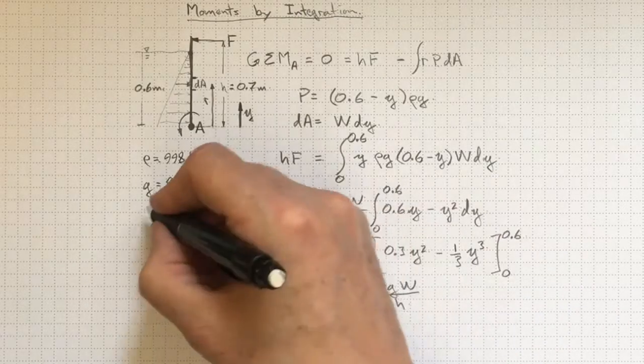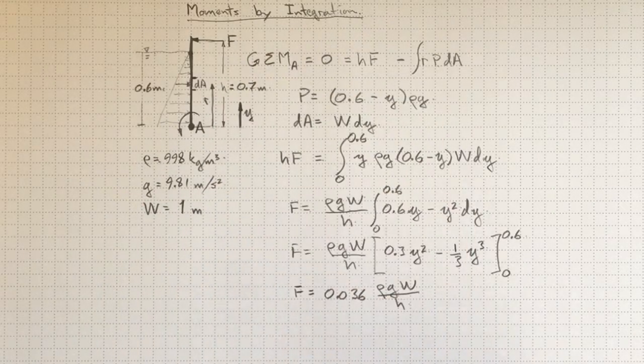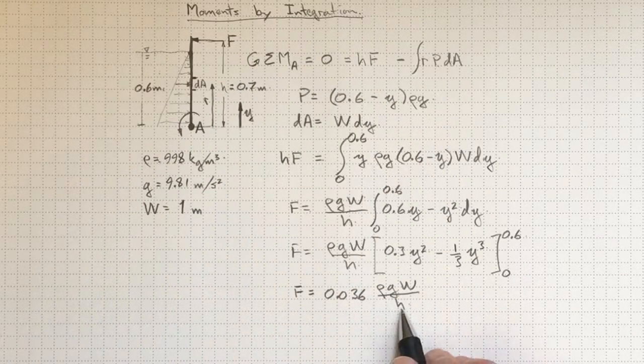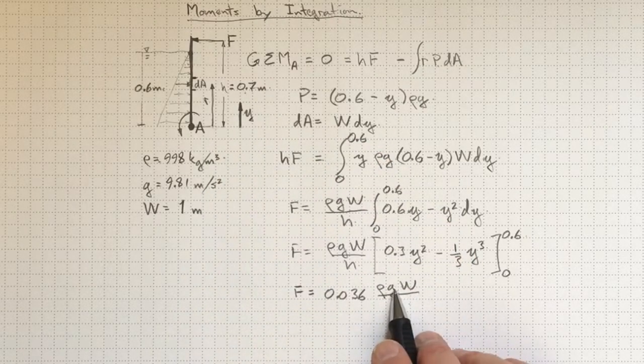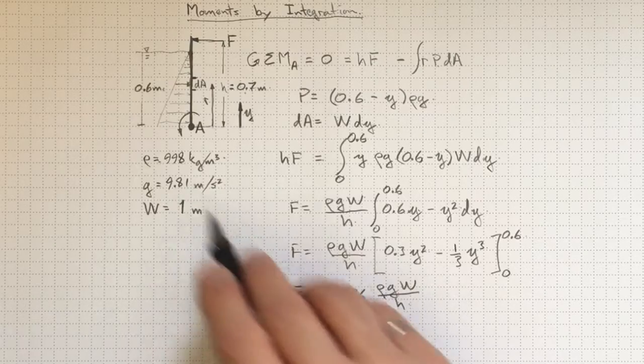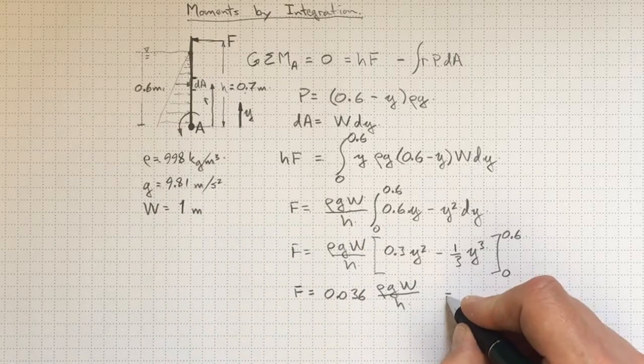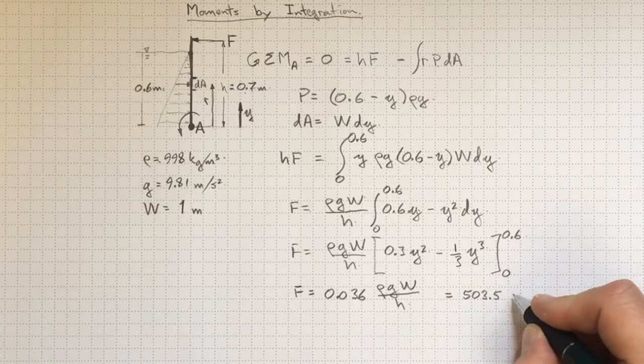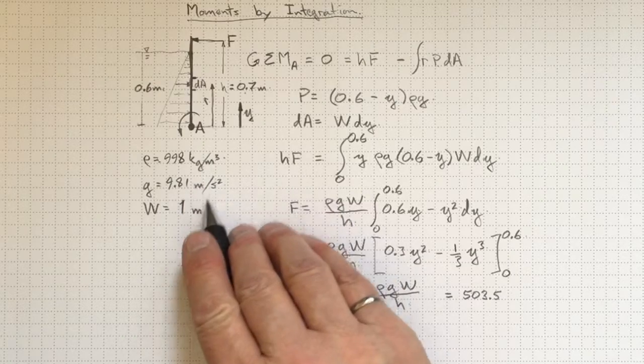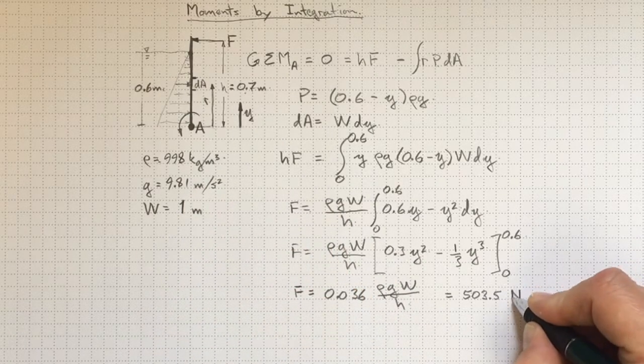If I take W equal to one meter into the page for the width, then I know all the things I need to make this calculation. I can plug in H equal to 0.7, g equal to 9.81, rho equal to 998 kilograms per cubic meter. And the answer that will come out is 503.5. And because I did everything consistently in kilogram meter second units, that's going to be a force in newtons.